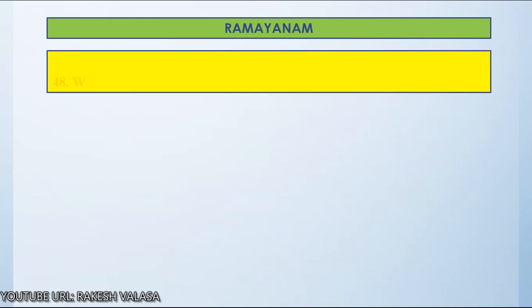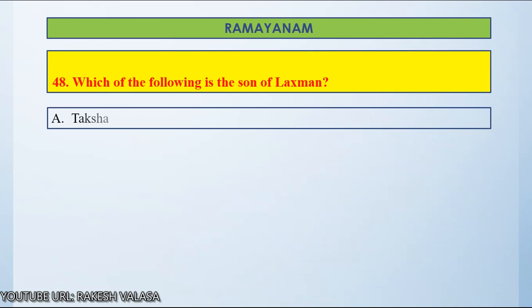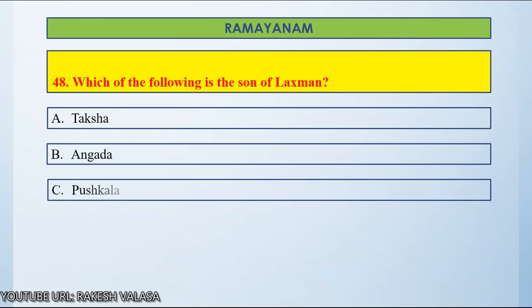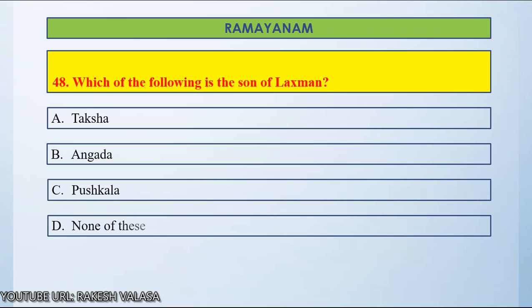Question number 48: Which of the following is the son of Lakshman? Option A, Taksha. Option B, Angada. Option C, Kushkala. Option D, None of these. Let us count and start.